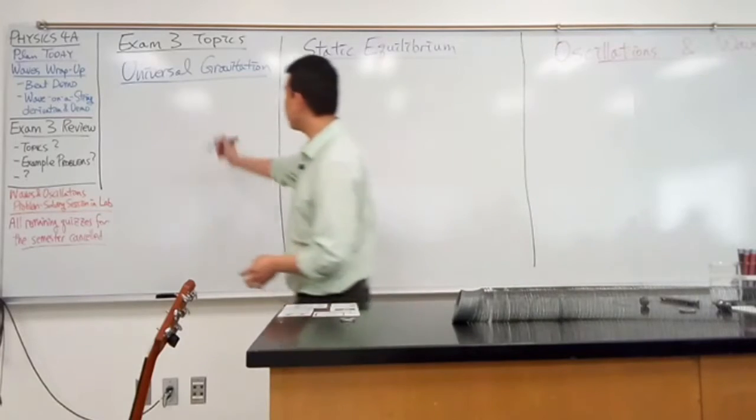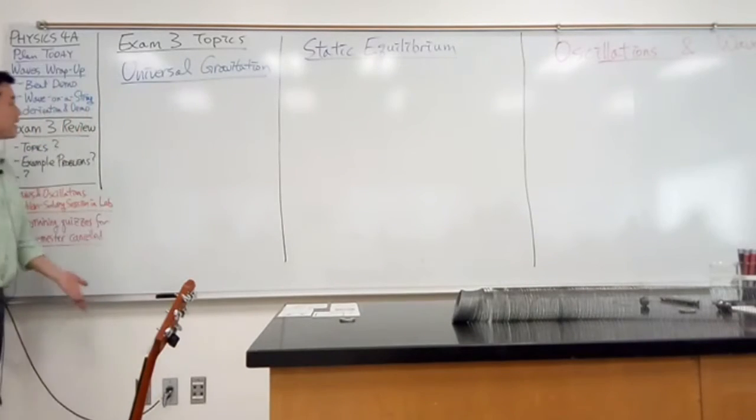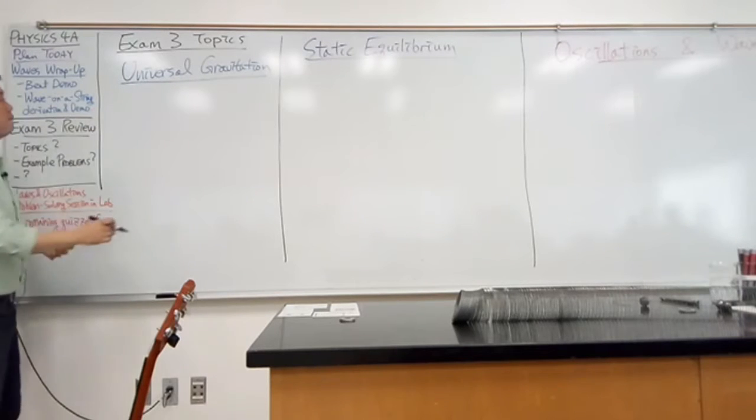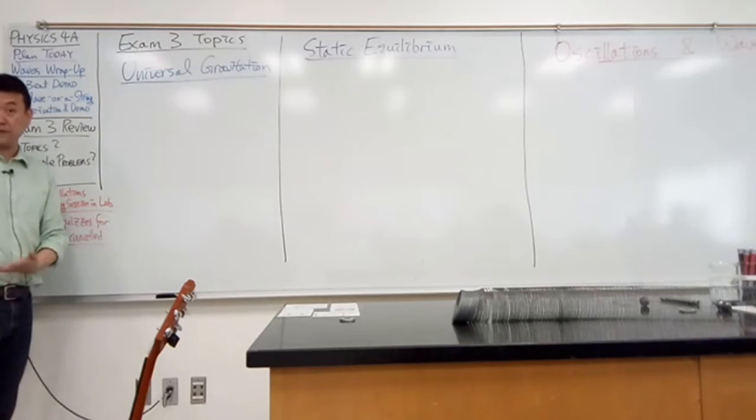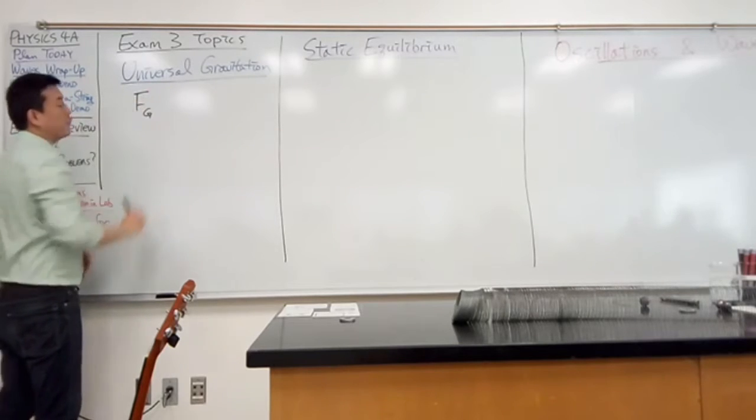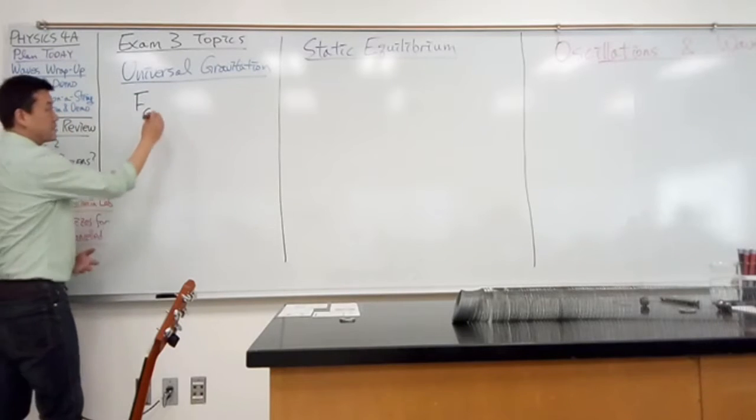So, with universal gravitation, I guess this is the most important thing: the form of the force for the universal gravitation. Everybody remember that form? Everybody remember what inverse square law means? Yeah, so Newton's law of universal gravitation says that magnitude of gravitational force is given by this expression.